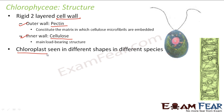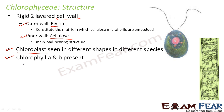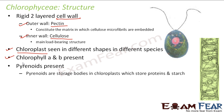Chloroplasts are seen in different shapes in different species — in some it is spiral-shaped, in some ribbon-shaped. In Spirogyra, the chloroplasts are ribbon-like structures arranged in a spiral form, which is how it got its name. In some species the chloroplast is disc-shaped, in some cup-shaped. Chlorophyll a and b are both present in Chlorophyceae.